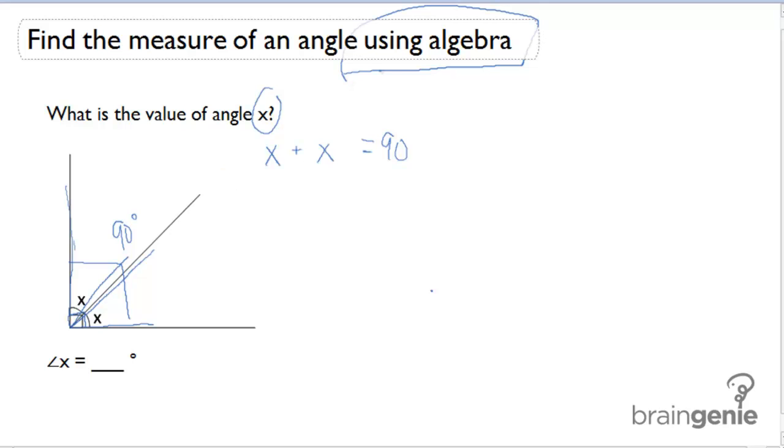If I want to find the value of x or the value of the angle, we can simply use algebra to solve this problem. We have the equation x plus x equals 90. x plus x is equivalent to 2x, so 2x equals 90.